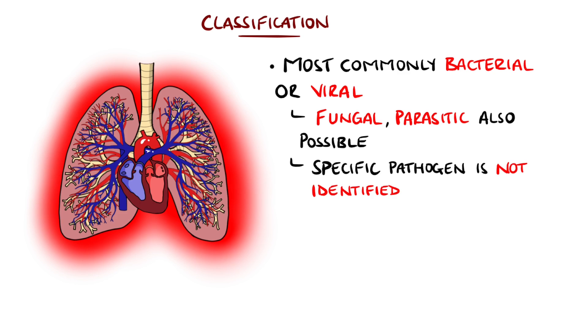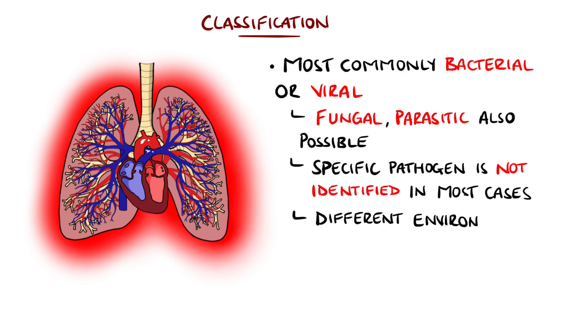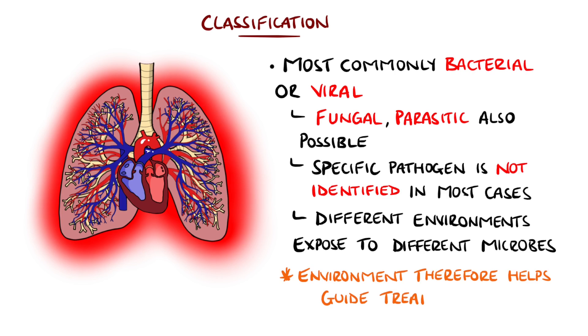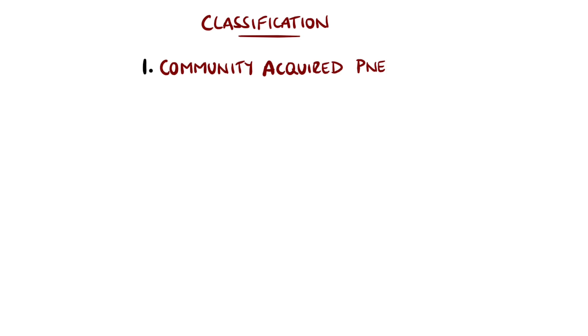In most cases the specific microbe responsible for the pneumonia is not found, but because similar pathogens are found in certain environments, pneumonia generally gets divided into categories. By knowing the environment and therefore the likely microbes the patient was exposed to, treatment can be tailored to cover those microbes.